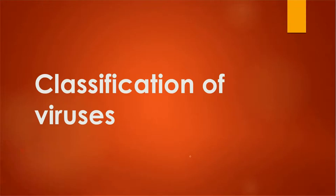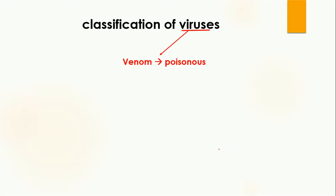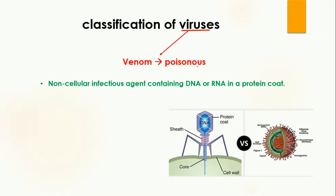Hello and welcome to Ahmed Coaching. This is your teacher Dr. Anam. Today's lesson is about the classification of viruses. The word virus comes from the word venom, which means poisonous. Viruses are non-cellular infectious agents — infectious means that they are going to cause infection in the organism they penetrate.